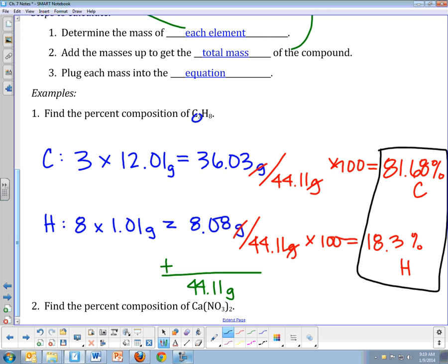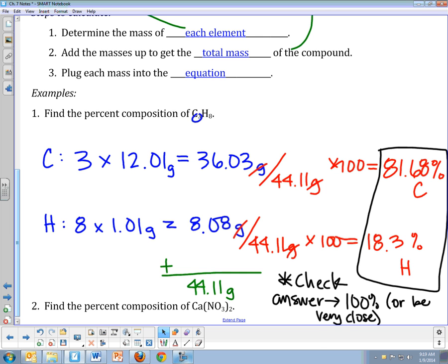A way to check your answer. They should add up to what? 100%. Or be very close. Very close, meaning they might not be quite exact because of rounding or sig figs. So does this add up to very close to 100? Well, 81.68 plus 18.3 gives me 99.98. Yeah. And if I had carried out more decimal places, it would have been even closer.